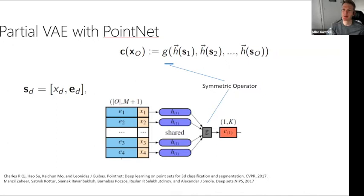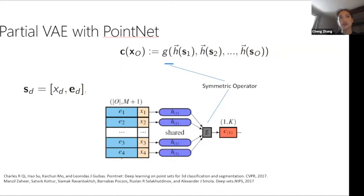Question: how does partial VAE work with discrete values? For VAE, you just use the corresponding likelihood. For a continuous temperature value, use a Gaussian likelihood; for binary like/dislike in a recommender system, use a Bernoulli likelihood; for five-star ratings, use an appropriate categorical likelihood. You simply choose the corresponding likelihood form in the decoding step for P(x|z).